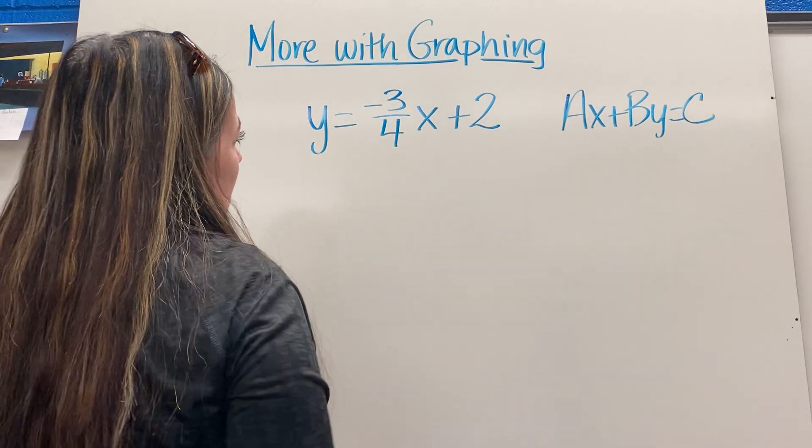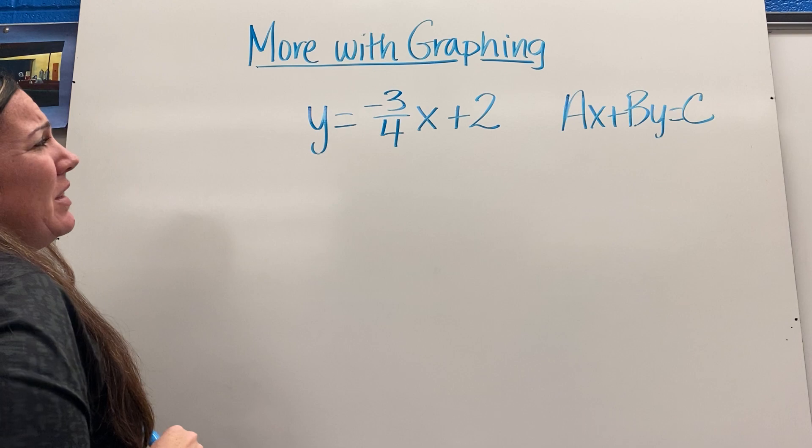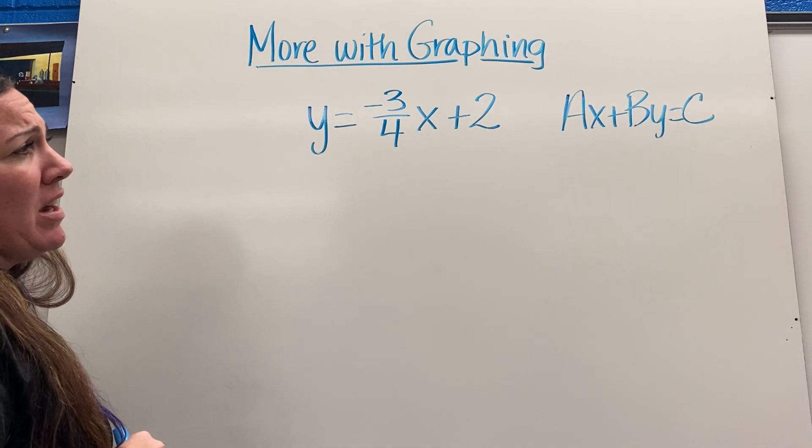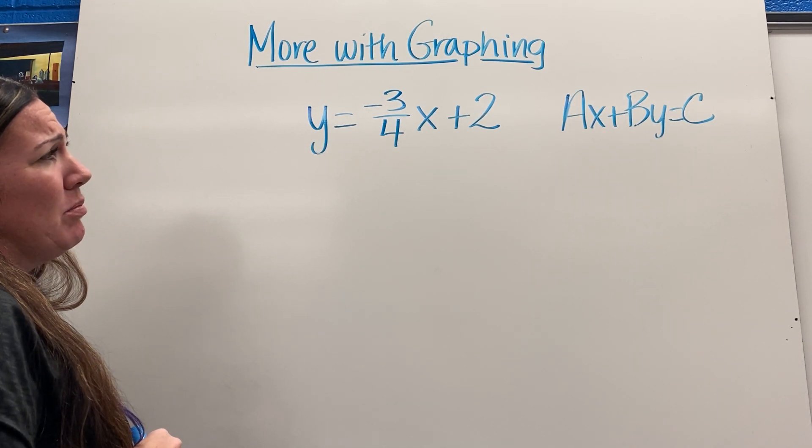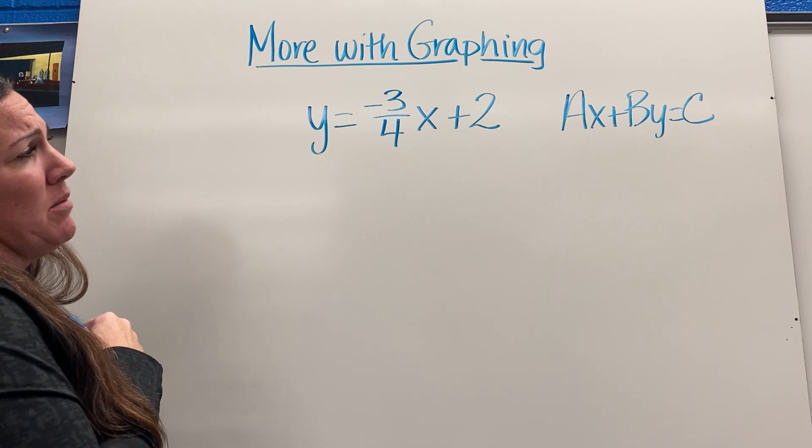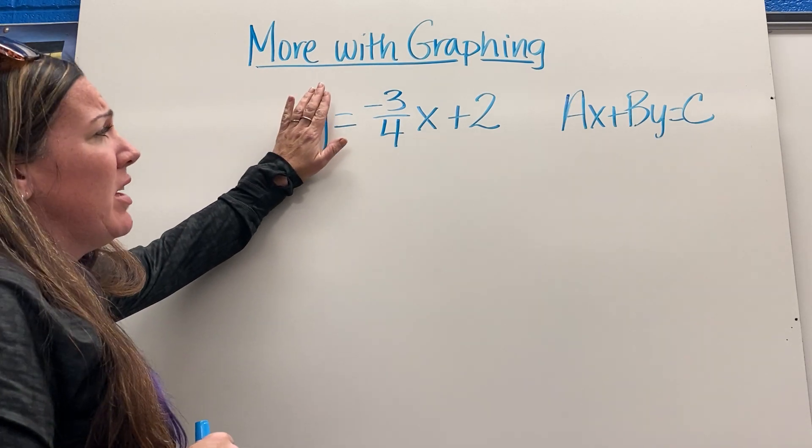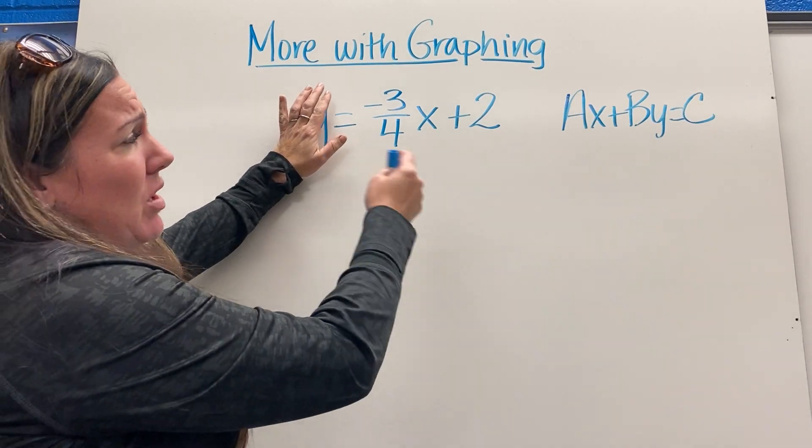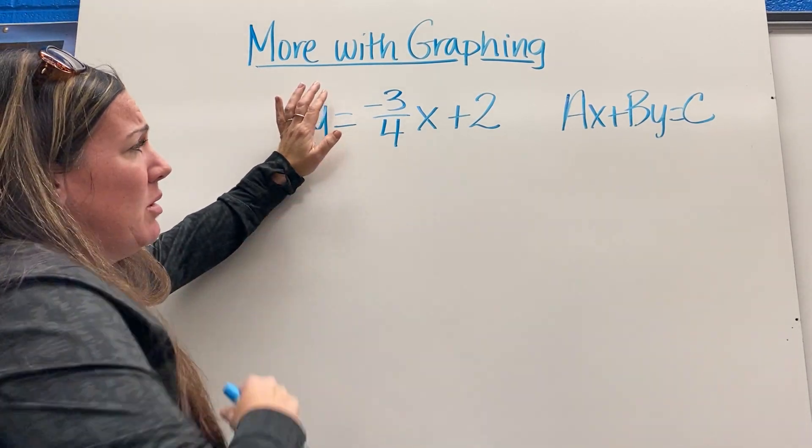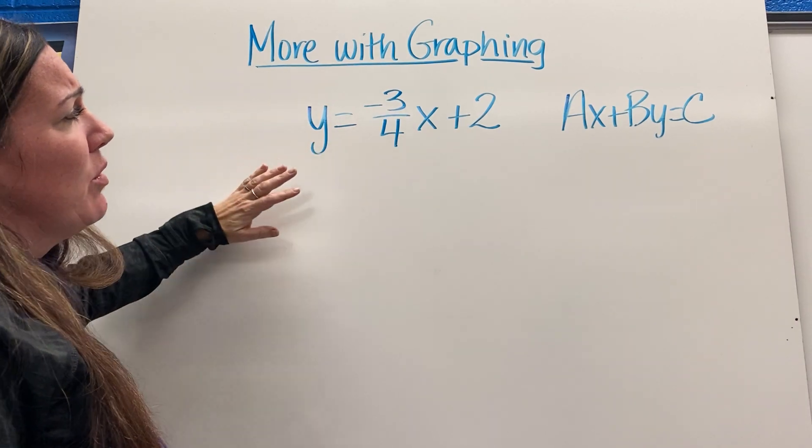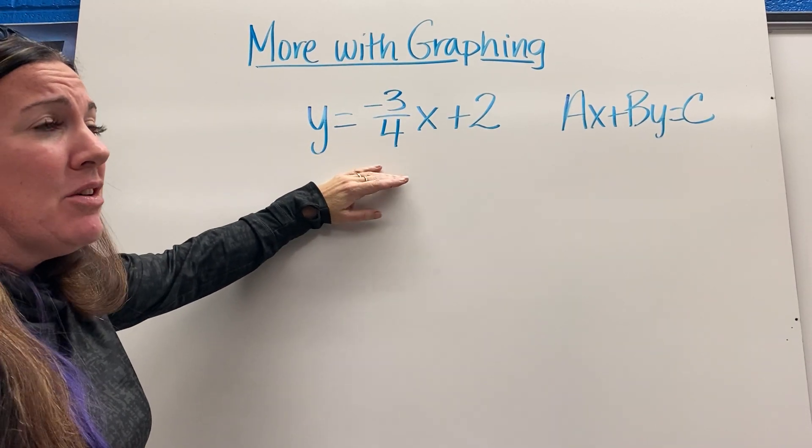I also don't want the fraction in there, because when I use intercepts and I'm making one equal to zero, first off if I was to make y equal to zero then I would have to solve for x and it would be a little bit messy. So instead what I'm going to do is I'm going to clear my fractions.